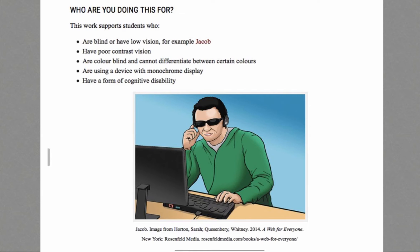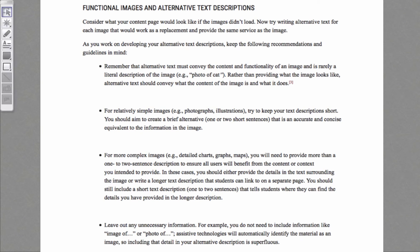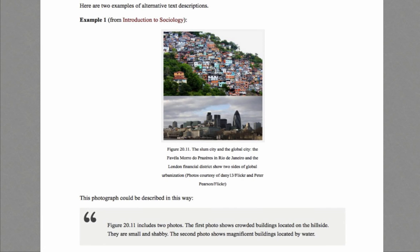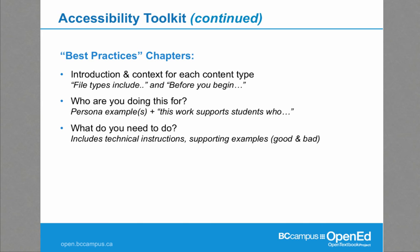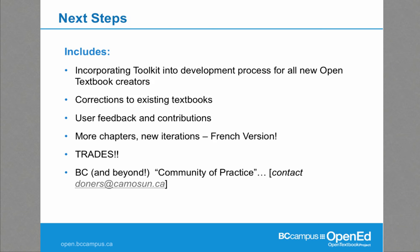Each chapter starts with: who are you doing this for? What type of person are you accommodating? For example, does the student have low vision or is he blind? It gives you an image of what that student would be doing, and then presents best practices — for example, how to look at functional images and alt text descriptions — along with examples showing how this works in practice. We always start with introduction and context: who are you doing this for and what do you need to do?